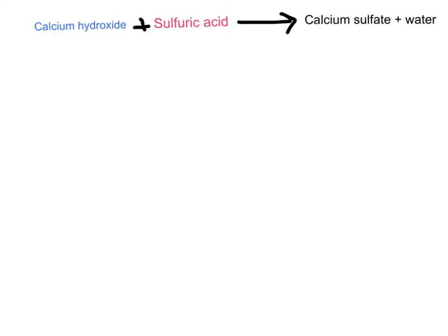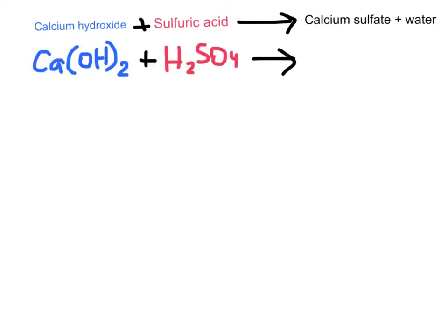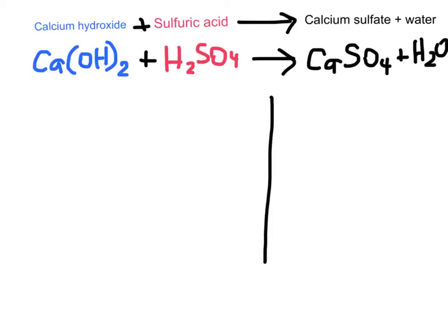So let's write out the symbols. Calcium hydroxide: hydroxide is a 1− ion and calcium is a 2+ ion, so we need brackets — Ca(OH)2 — meaning two hydroxide ions for every calcium ion. We then add sulfuric acid, H2SO4. On the other side that gives us calcium sulfate, CaSO4 — calcium is 2+ and SO4 is 2−, so that balances nicely — and water.